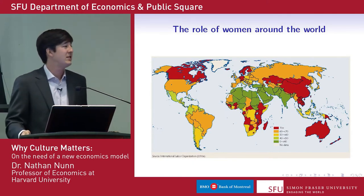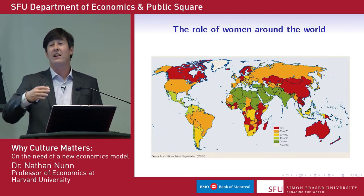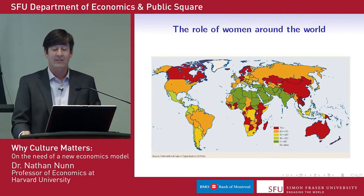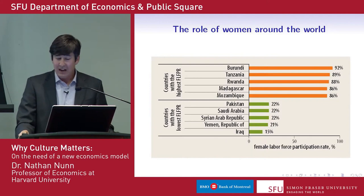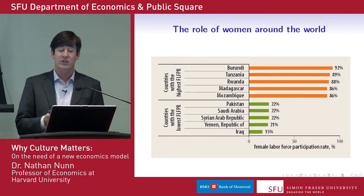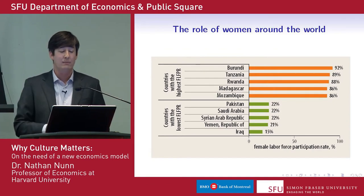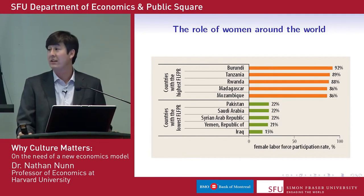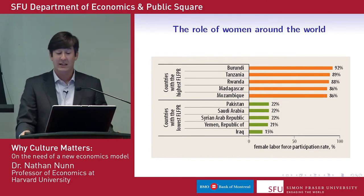You might think the answer is simple about what causes this — it's income. As the US developed, you have more opportunities for women, more demand for labor, and higher income. We saw that in the US, we saw that in Canada. But if you actually look at countries with the highest rates of female labor force participation and the lowest, they're both actually developing countries. And the countries with the highest are, on average, poorer than the countries with the lowest. So I don't think it's income — income definitely doesn't explain things.